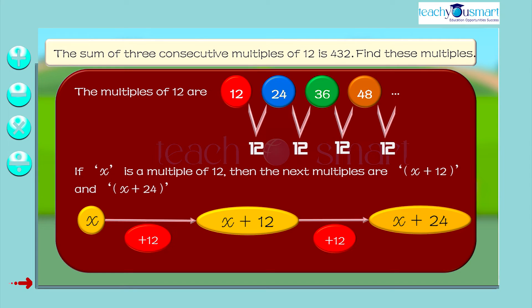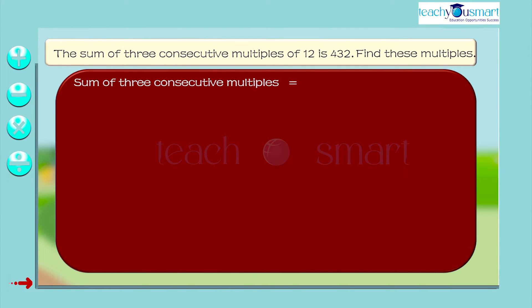Given that the sum of three consecutive multiples is 432, that is x plus x plus 12 plus x plus 24 equals 432. That is 3x plus 36 equals 432.